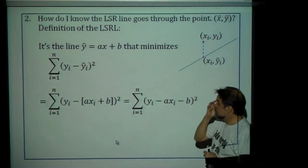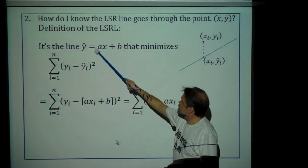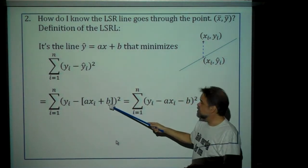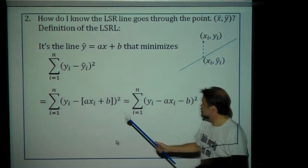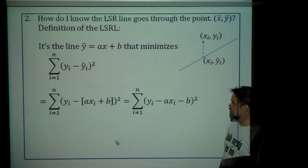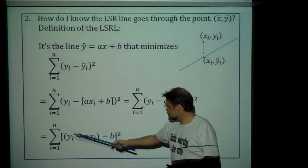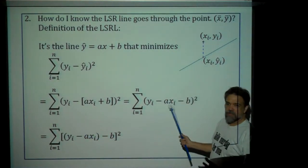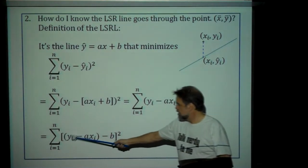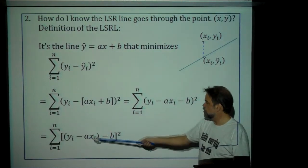So let's get beyond that. We have y-sub-i minus y-hat-i, and since y-hat-i equals a times x-sub-i plus b, let's make that substitution. After we distribute that minus, we get the sum of all y-sub-i minus a times x-sub-i minus b, all squared. And I'm now regrouping this, so this is the sum of (y-sub-i minus a times x-sub-i minus b), that whole thing squared.